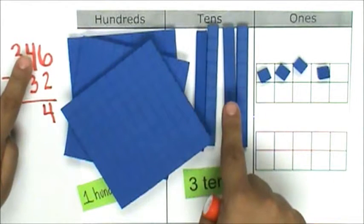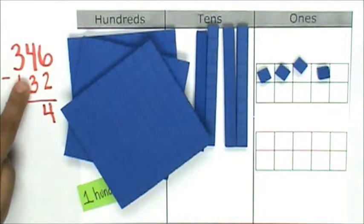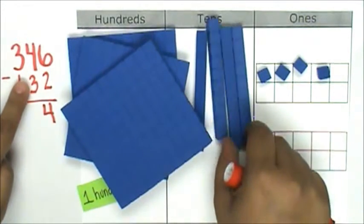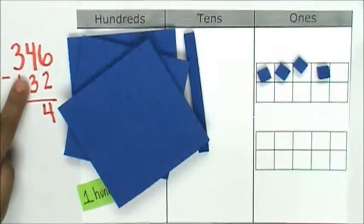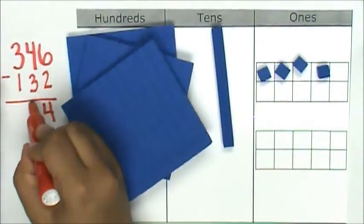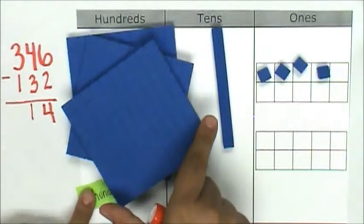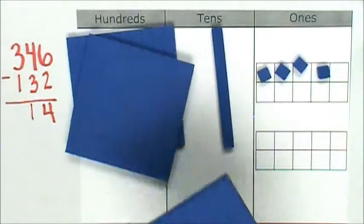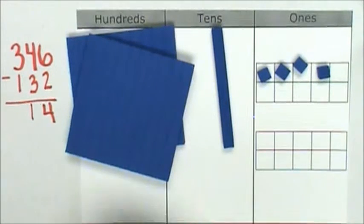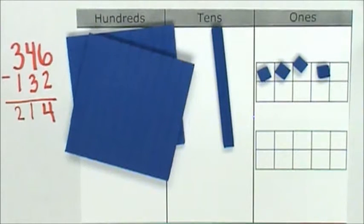4 tens minus 3 tens equals 1 ten. 3 hundreds minus 1 hundred equals 2 hundreds. My answer is 214 markers.